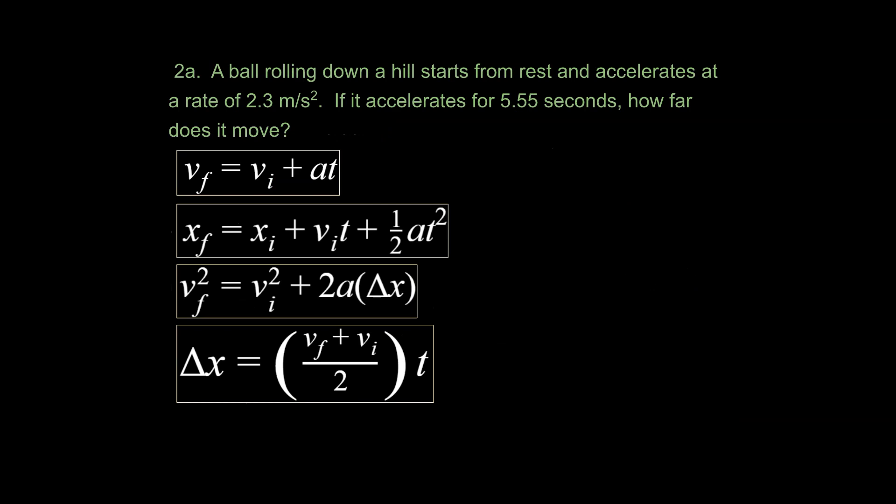All right. Let's take a look at another problem. It says a ball rolling down a hill starts from rest and accelerates at a rate that's given 2.3 meters per second squared. If it accelerates for 5.55 seconds, how far does it move? So the first thing we're going to do following our strategy is go ahead and write down, just take it little bit by little bit as you do the problem and go ahead and write down what the problem is saying as you read through the problem. And that's what I'm doing here.